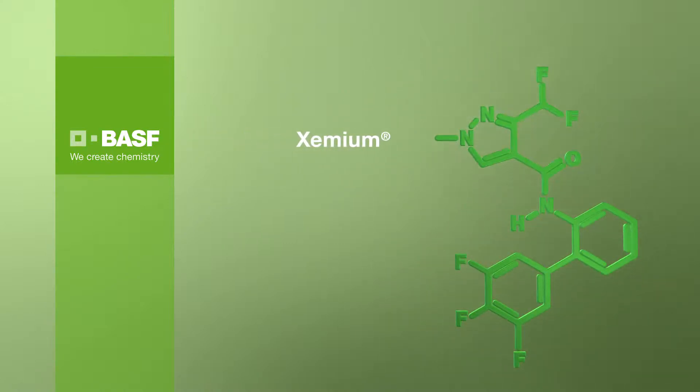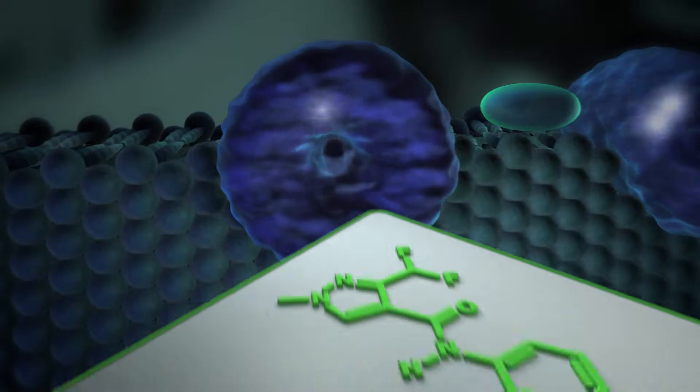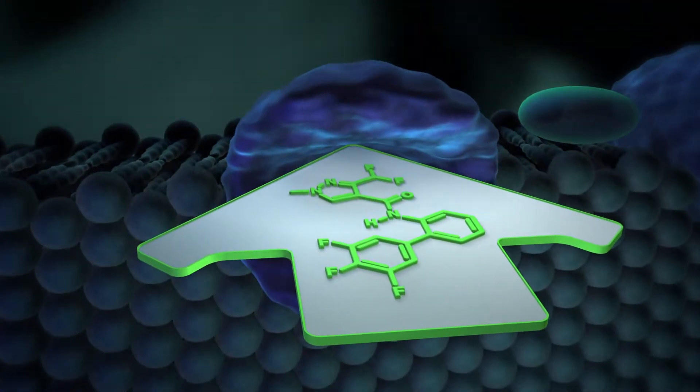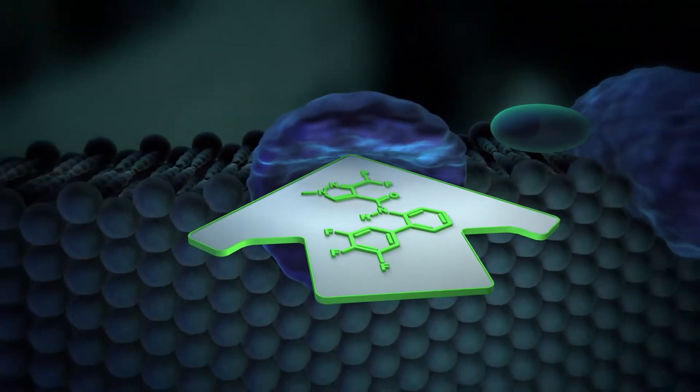Xemium, an innovative fungicide with an optimized molecular structure. Its unique properties allow it to quickly and effectively block its enzyme target, succinate dehydrogenase.